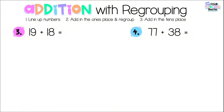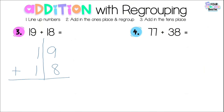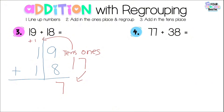For number three we have 19 plus 18. I line up my numbers vertically — 19 plus 18 — keeping ones with ones and tens with tens. Step two: add in the ones place and regroup. I have 9 plus 8. I'll use the near-double strategy because 9 is near 8. 8 plus 8 is 16, plus one more is 17. I bring the 7 down to the ones place and the ten goes up to the tens place. 1 plus 1 plus 1 is 3 tens — total is 37.